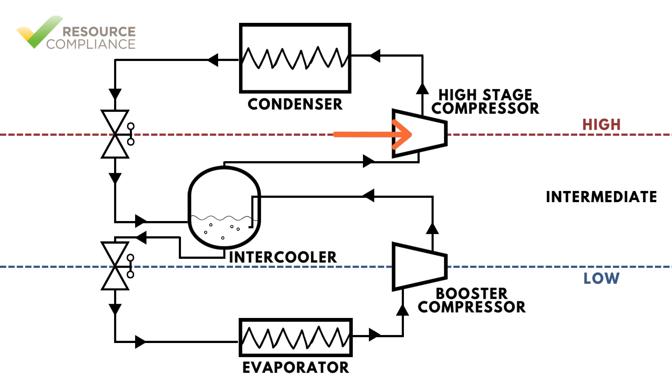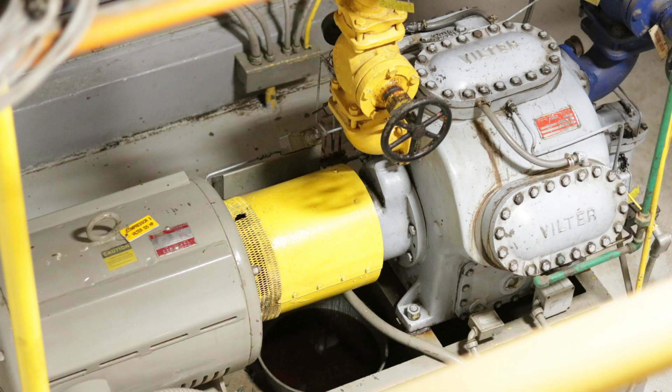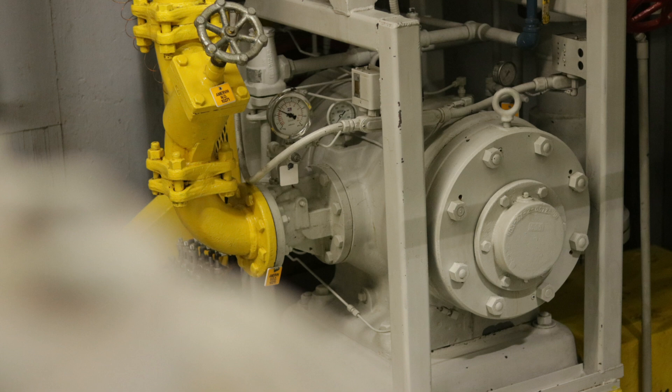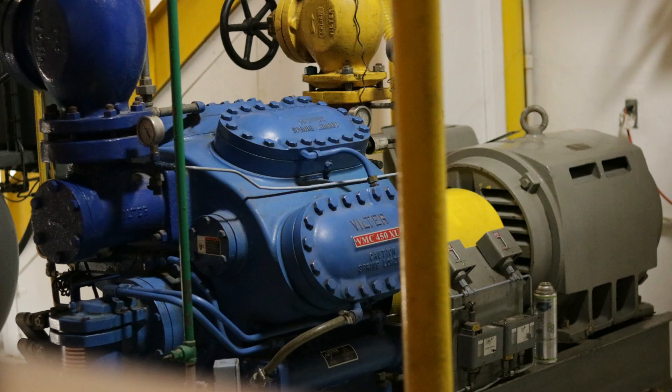That vapor is supplied to the inlet of the second stage compressor, which is typically called the high-stage compressor. Removing the superheat from the vapor supplied to the high-stage compressor results in a discharge temperature at the high-stage compressor that will not break down lubricating oil or damage the compressor.